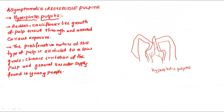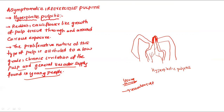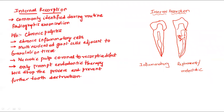In asymptomatic irreversible pulpitis, in young individuals the pulp can be hyperactive and grow beyond the tooth, appearing like a cauliflower growth — this is because the pulp is very vital and there is chronic irritation, generally found in young people due to their good vascular supply. Internal resorption is mostly visible only on radiograph. The patient suffers with chronic pulpitis, inflammatory cells, multinucleated giant cells, granulation tissue, and the pulp may be necrotic — only proper endotherapy can cure this.